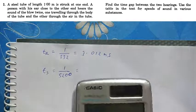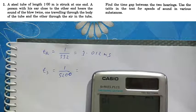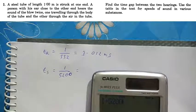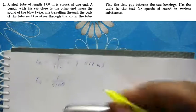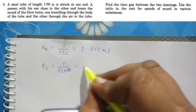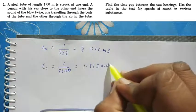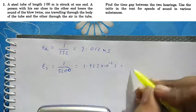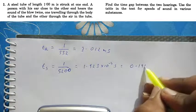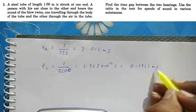that answer comes to be 1 by 5200, and it's 1.923 times 10 to the power minus 4 seconds, that is equal to 0.1923 milliseconds.